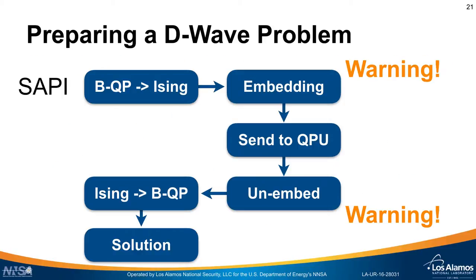To review, this is basically how you get a problem into the D-Wave computer. First, you take your binary quadratic program and convert it to an Ising model. Then you run the embedding algorithm to fit it on the hardware — and that's a big warning because that's NP-hard. Then you send it off to the hardware, it runs, and comes back. Then you un-embed it — another warning step because it can cause infeasible solutions if some chains were broken. Finally, you convert the Ising solution back to a binary quadratic programming solution and output it.